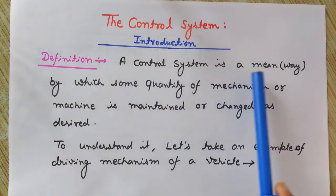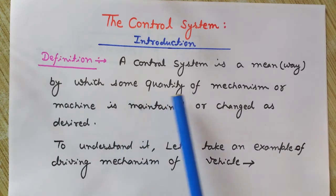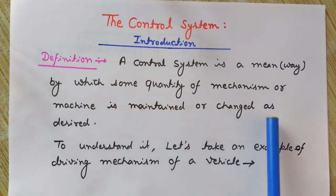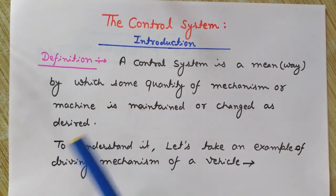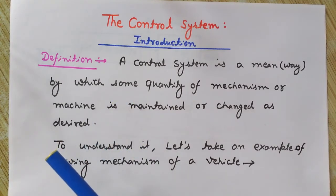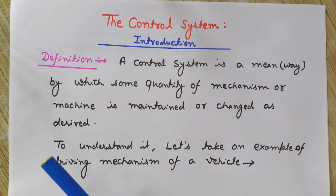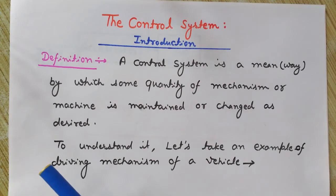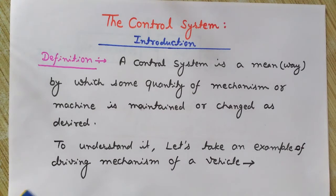A control system is a means by which some quantity of a mechanism or machine is maintained or changed as desired. In any control system, we either vary or maintain any parameter of interest of any machine or mechanism — for example, maintaining a constant temperature in a room, maintaining or varying the velocity of a vehicle, or maintaining a certain water level in a tank.